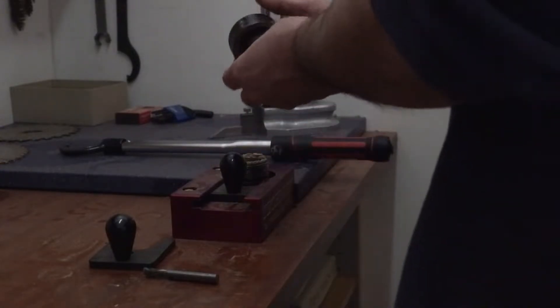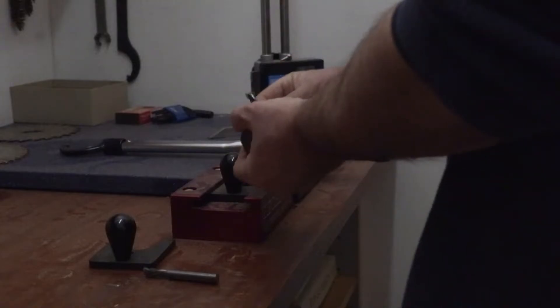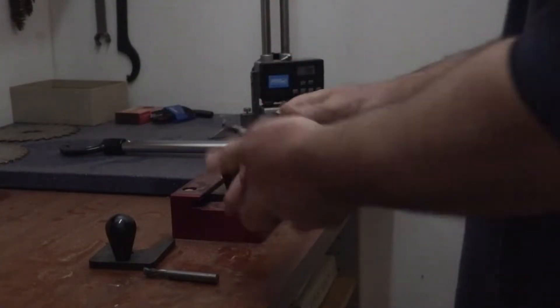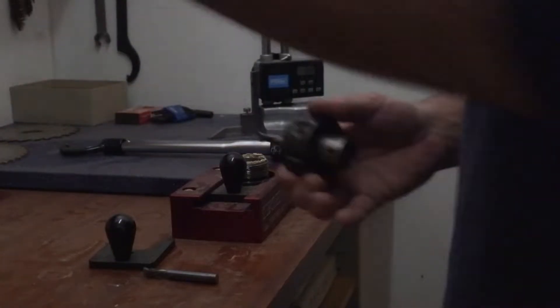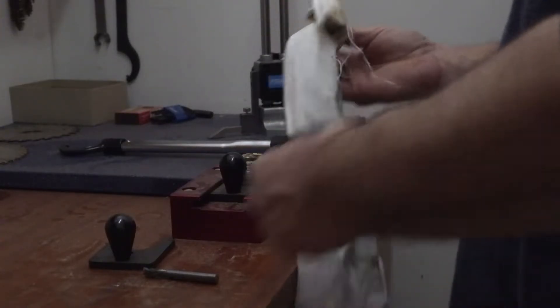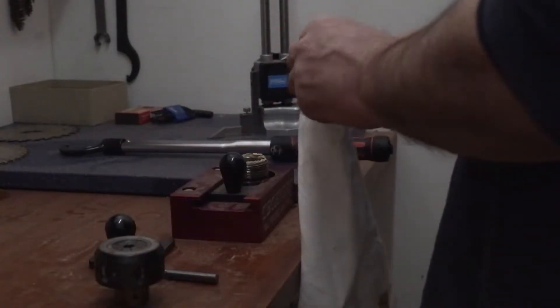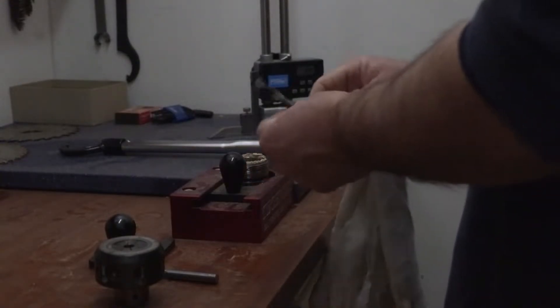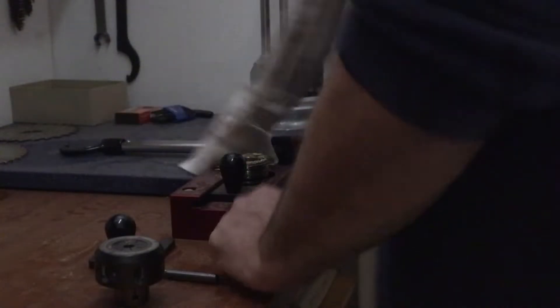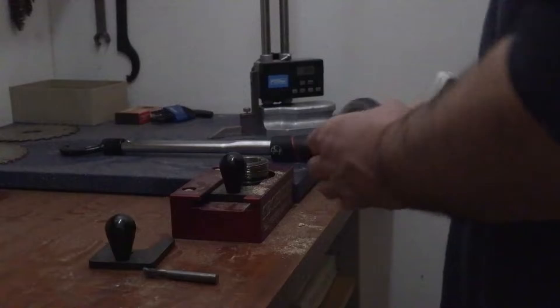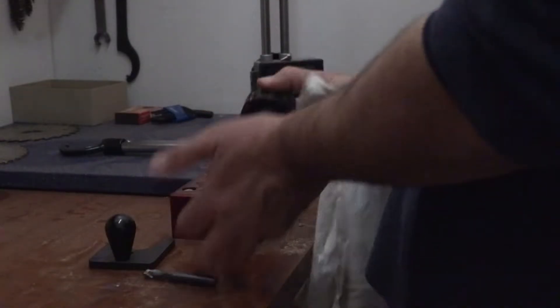Once it's out, we can clear off the collet. We need a rag to pull that tool out because we don't want to cut our fingers. This tool will go to get sharpened. Still got a fair amount of life left to it. And the collet comes out of the tool holder.